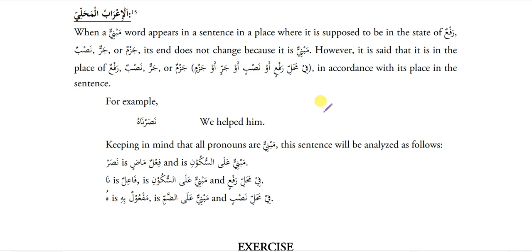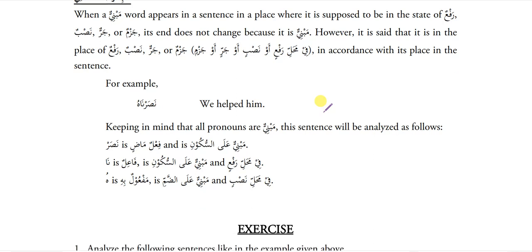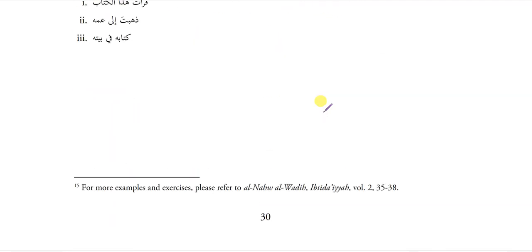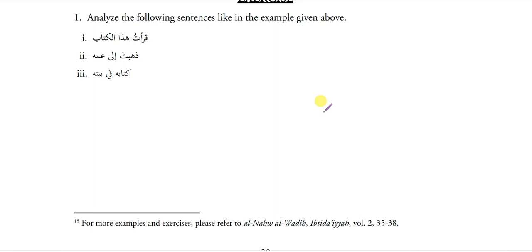Arabul Mahalli: when a Mabni word appears in a sentence in a place where it is supposed to be in the state of Rafa, Nasab, Jarr or Jazm, its end does not change because it is Mabni. However, it is said that it is in the place of Rafa, Nasab, Jarr or Jazm in accordance with its place in the sentence. For example: Nasarnahhu — we helped him. Let's solve the exercise and then I will explain everything on the board.